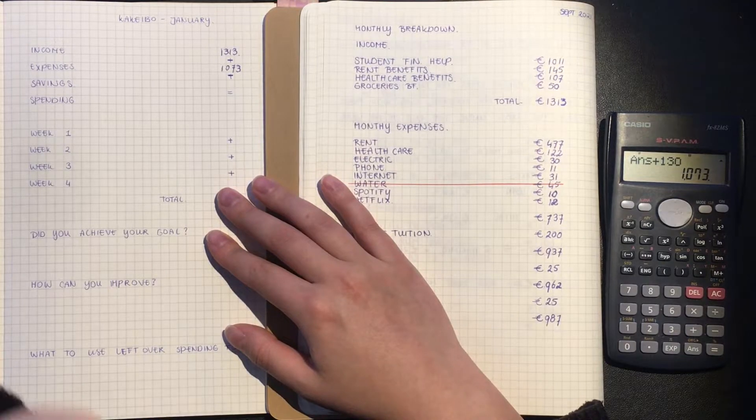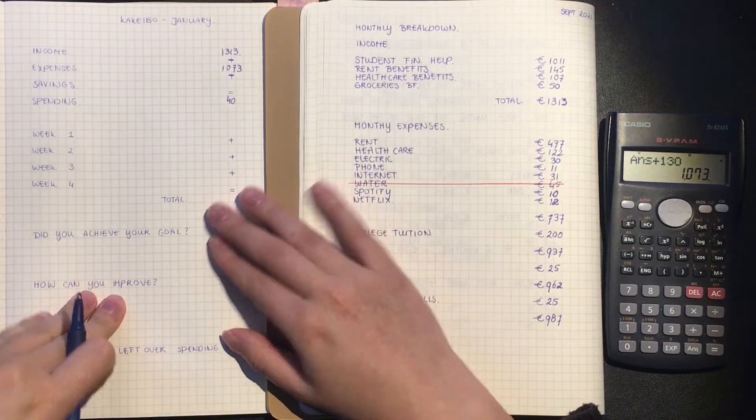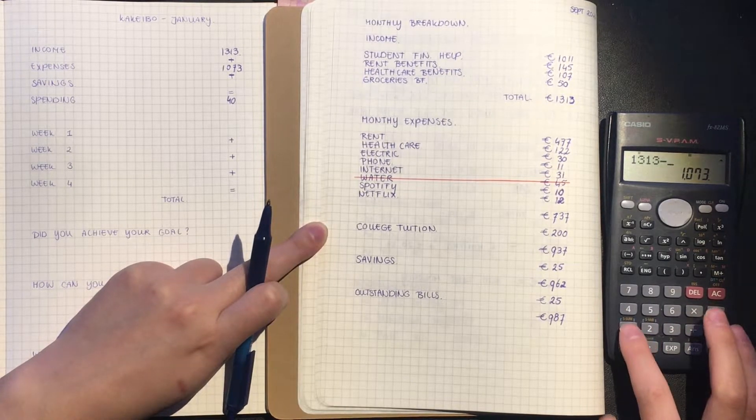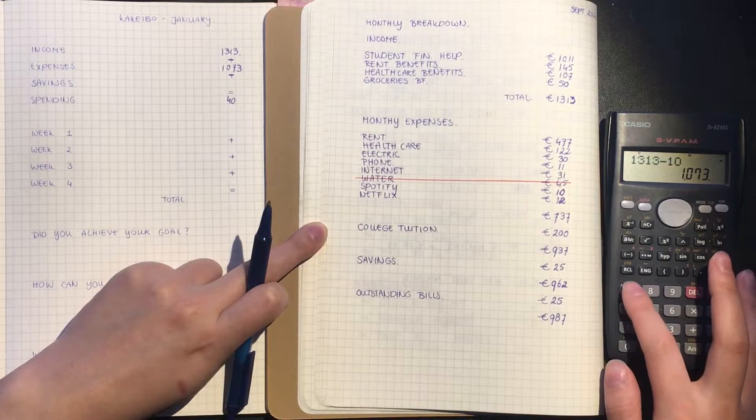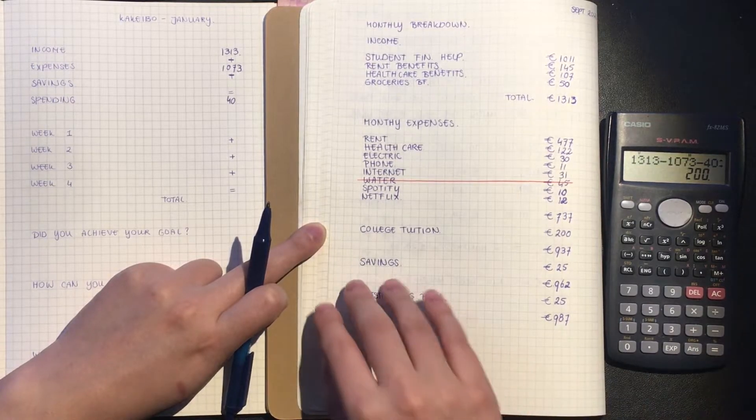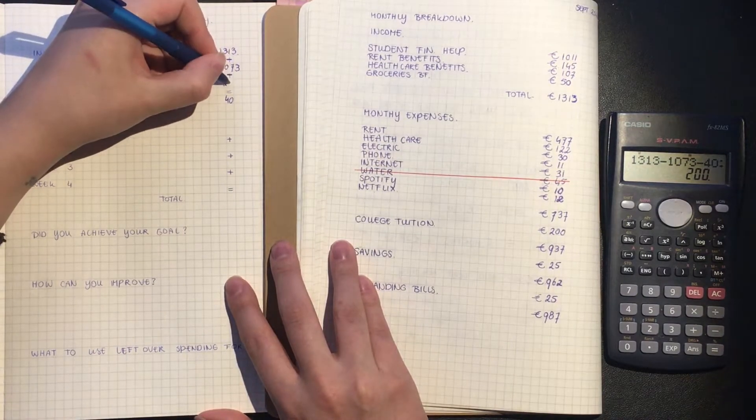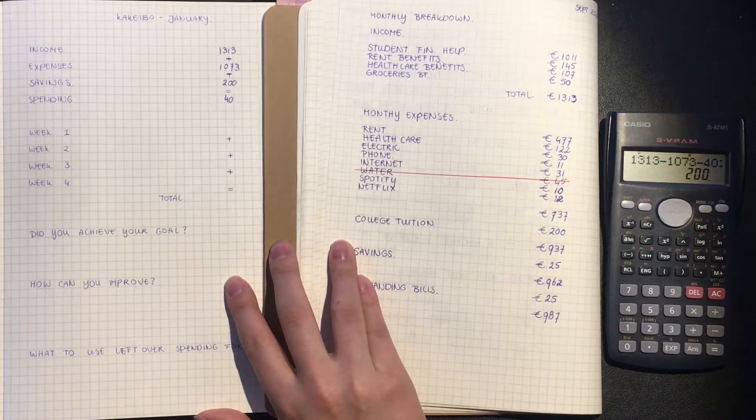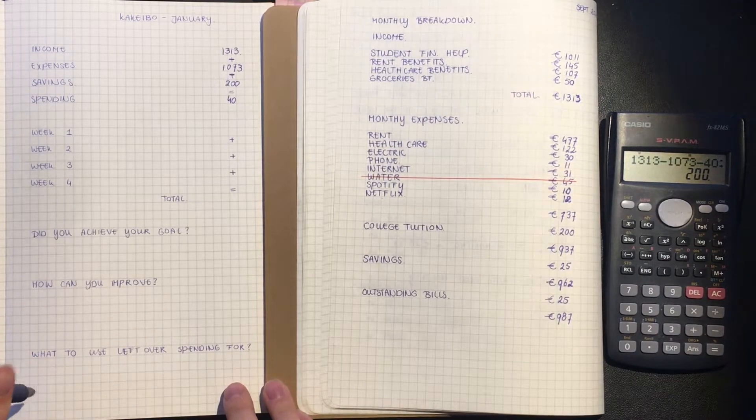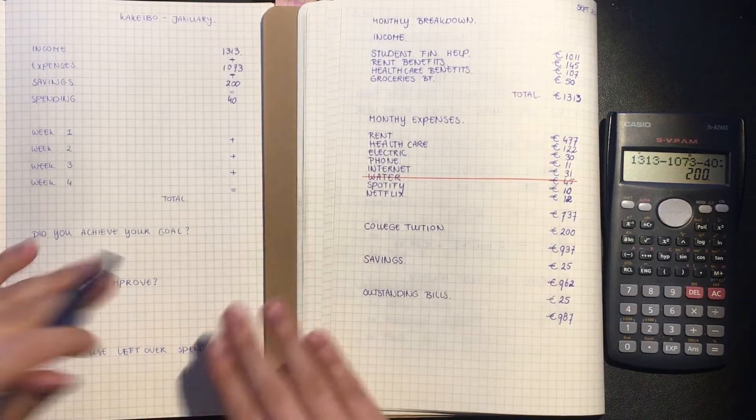Which means if we use my 40 euros in spending that I have each month, which is 10 euros a week, we have 113, and we're subtracting 1073 and 40 is 200 euros as savings. I don't know why that took so long but that's fine. So that is what I'm going to put in my sinking funds. I don't know what I'm going to use my leftover spending for, so I'm just leaving that blank for now. Probably in the next week I will know what I want to use it on.